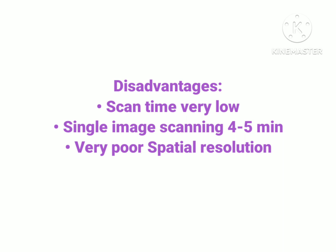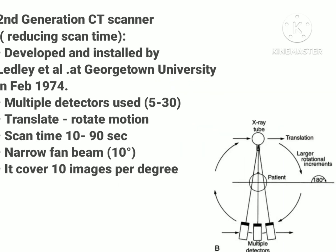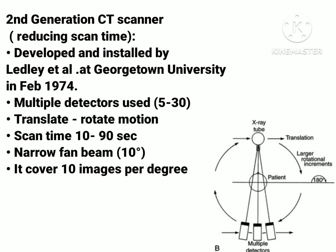The disadvantages of the first generation CT scanner: firstly, the scan time is very slow — approximately 25 to 30 minutes for the whole CT scanning. Next, a single image scan takes four to five minutes, and it has very poor spatial resolution.